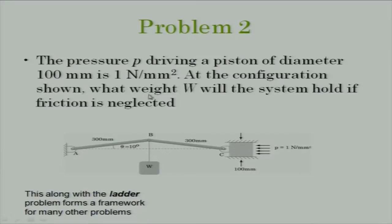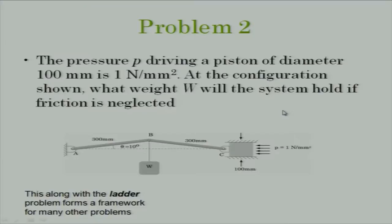What we are asked is: given the configuration shown where all angles are given, and given the pressure and diameter of the cylinder — meaning we know the horizontal force acting at point C — find the load that we should apply at point B for the system to be in equilibrium at θ = 10 degrees. This is a simple problem you can do in three lines using two-force members.